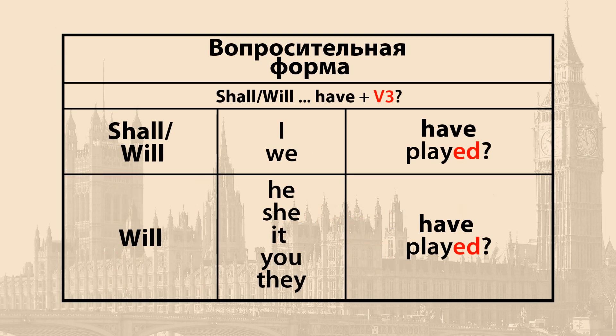Для того, чтобы составить вопросительное высказывание, мы вынесем will на первое место в предложении. Например: Shall I have played? или Will I have played? Will she have played? Will they have played?